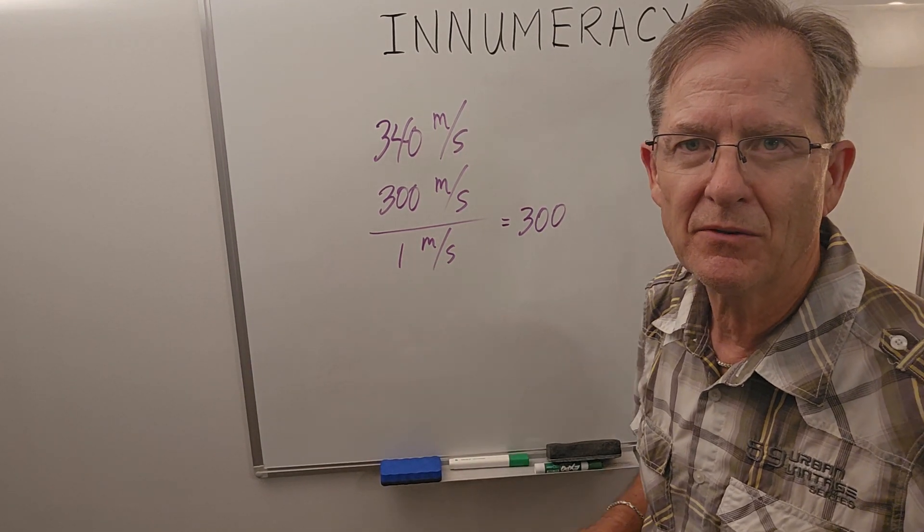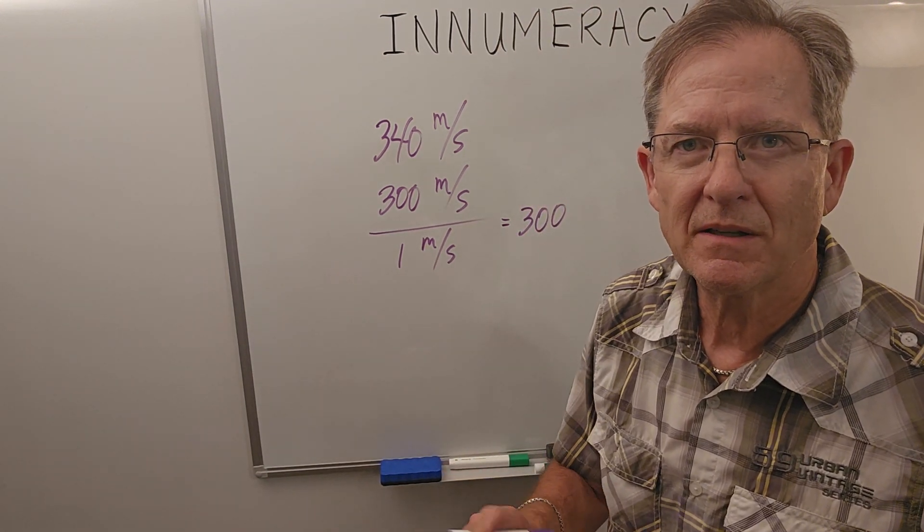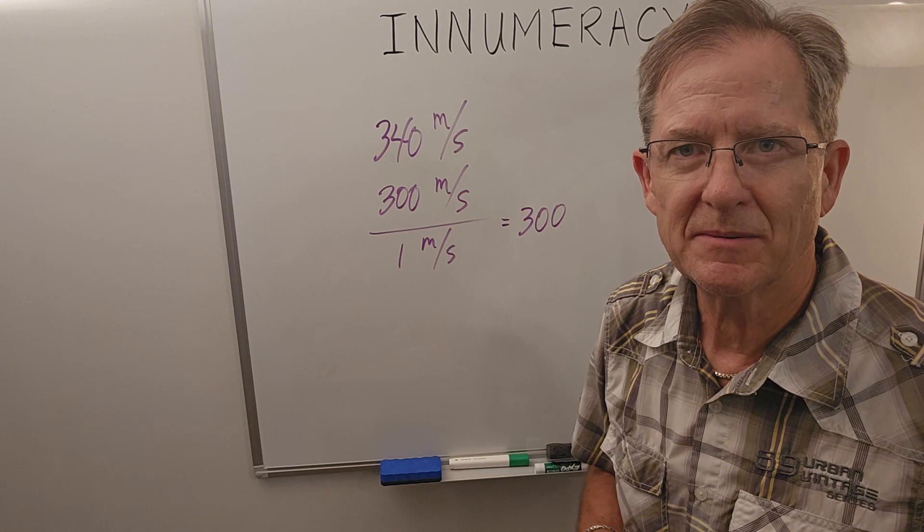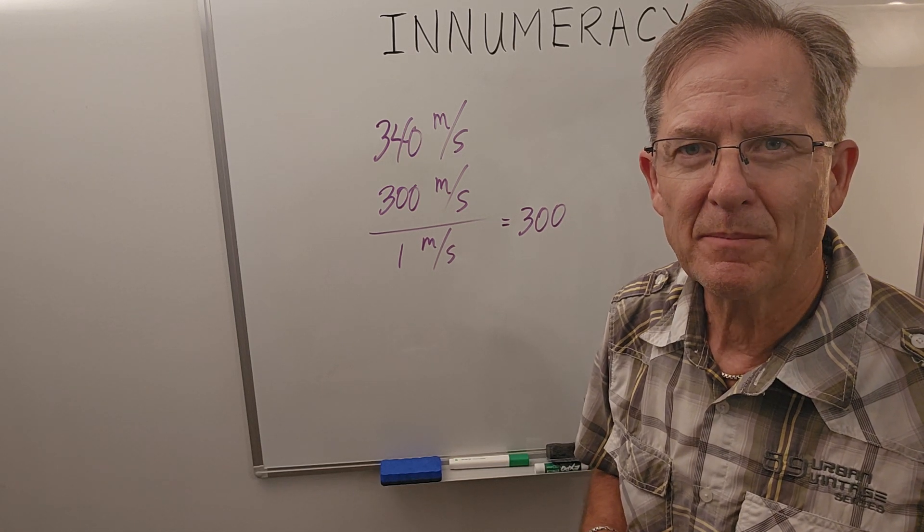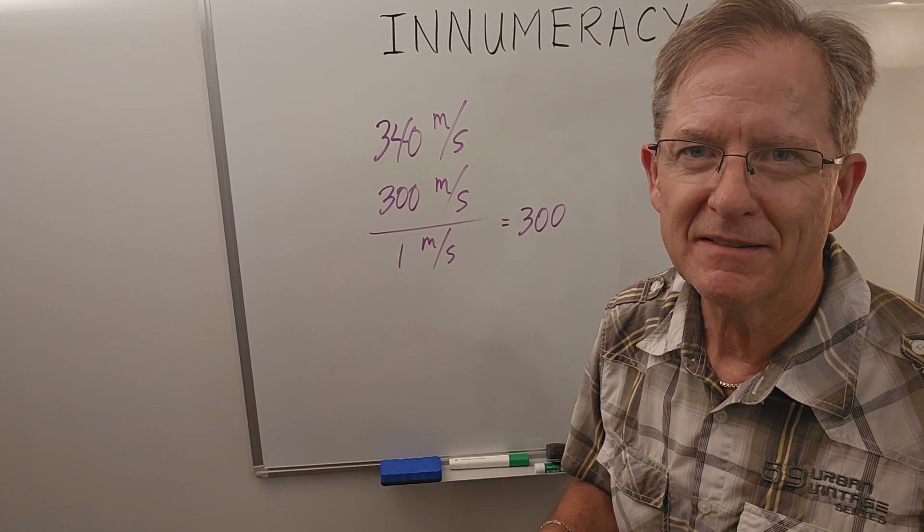So, when they give you Fermi questions in a contest of some sort, there's always a range of acceptable answers. As long as you're in the right ballpark, you get full marks. If you stray from that, part marks.